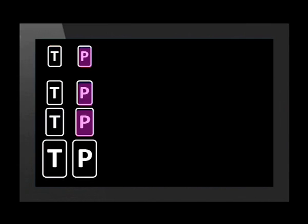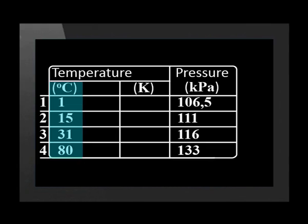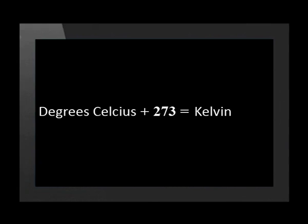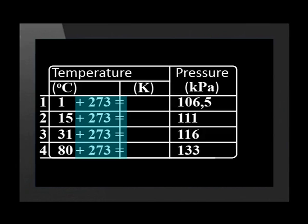So, as temperature increases, pressure increases. But we already know that pressure is not directly proportional to degrees Celsius temperature. Now let's convert our temperature values into the unit Kelvin. This is the equation for the conversion from Celsius to Kelvin — we add 273 in each case.